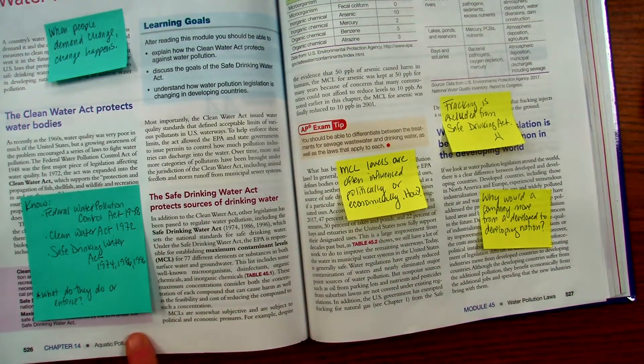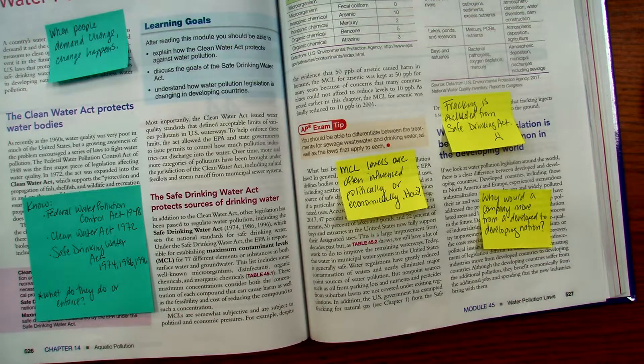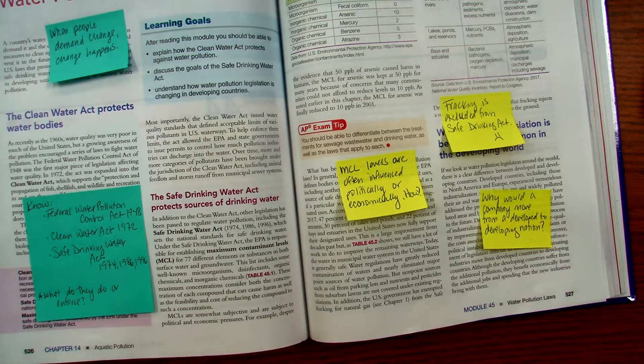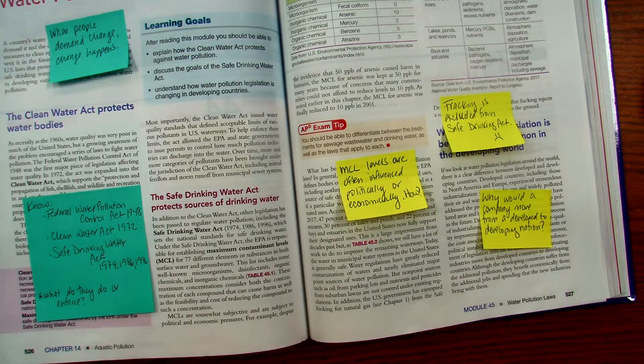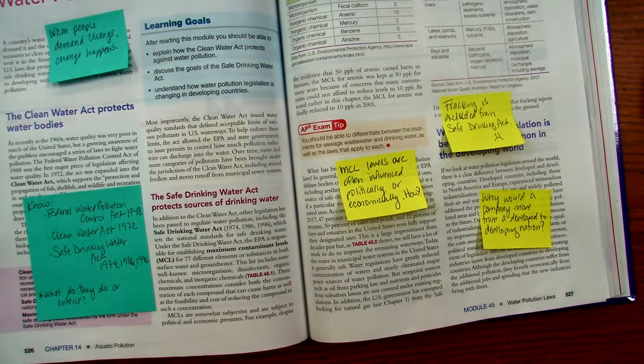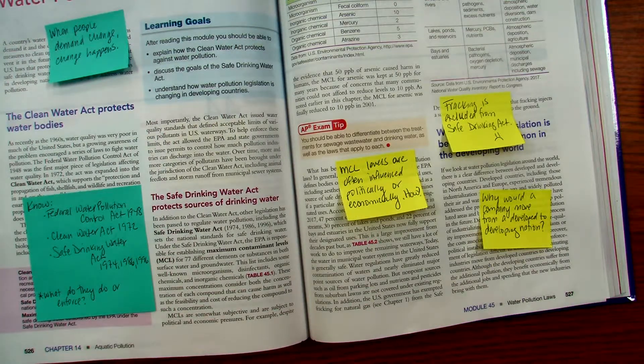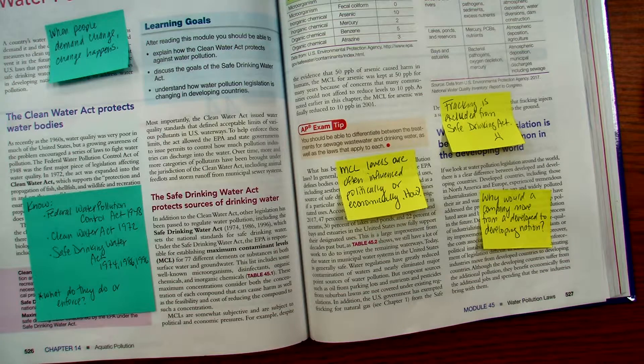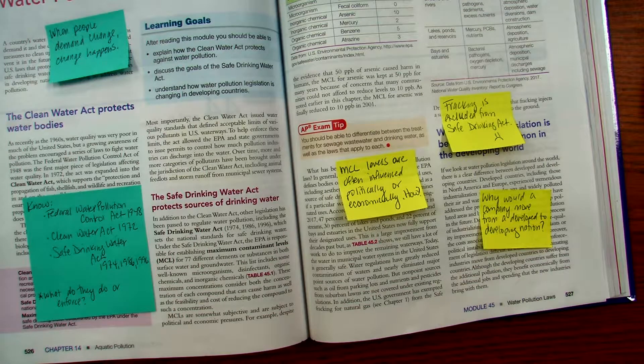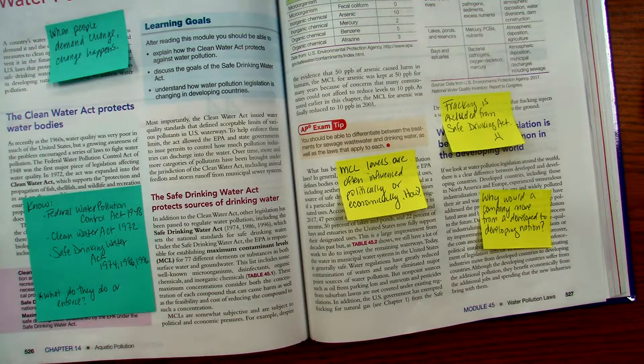So down here at the bottom, you'll need to know these different legislation acts that were in play, and they kind of led to each other. So the first one, the Federal Water Pollution Control Act of 1948, that was kind of the first initial water protection, and then that led to the Clean Water Act, which eventually led to the Safe Drinking Water Act.